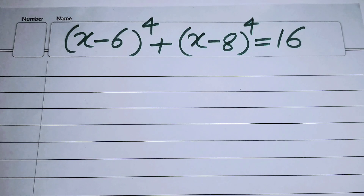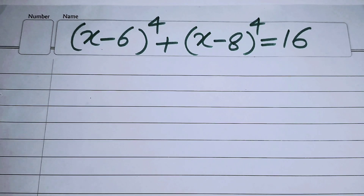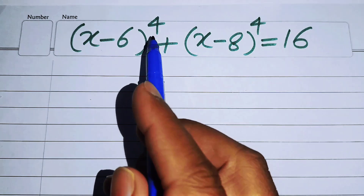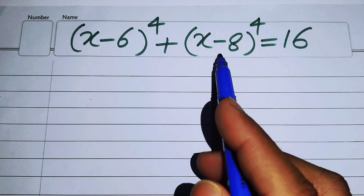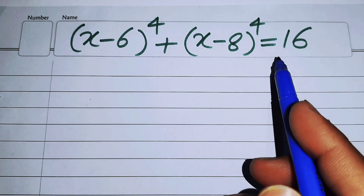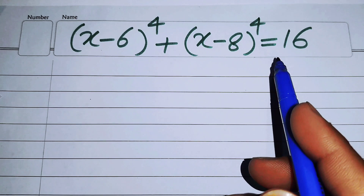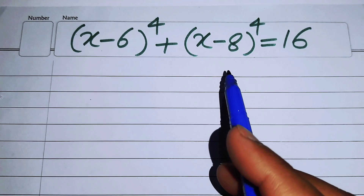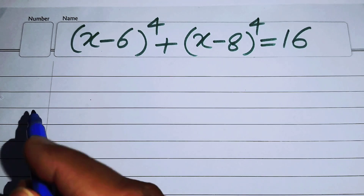Hello everyone, welcome back to the Map of Mathematics. In this video we are going to solve this nice math algebra problem. We have (x - 6)^4 + (x - 8)^4 = 16, and we solve this problem for the values of x.